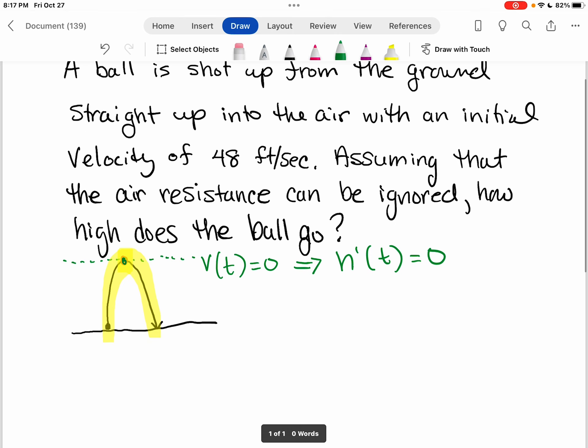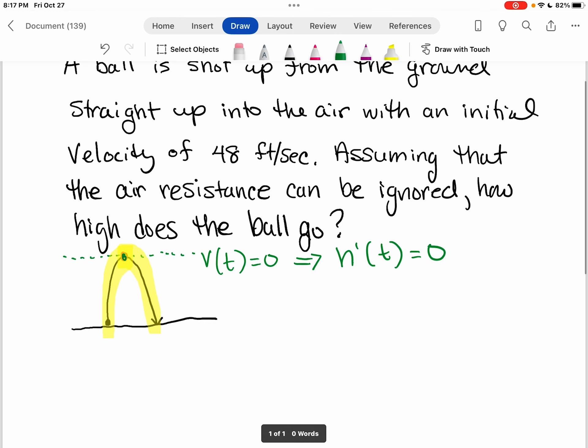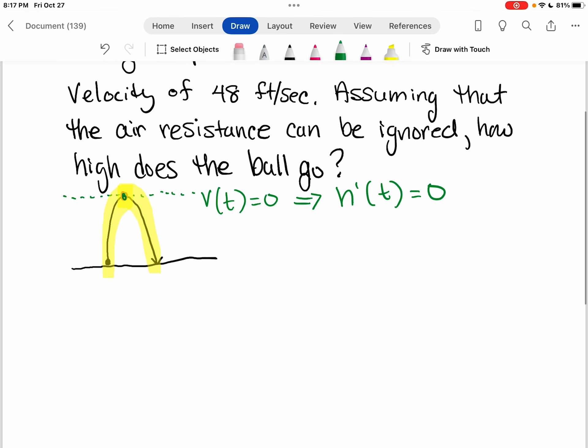And this is the derivative of the height function. So the first thing we want to do is find where the velocity is equal to zero. And in order to do that, we need to find the velocity function.